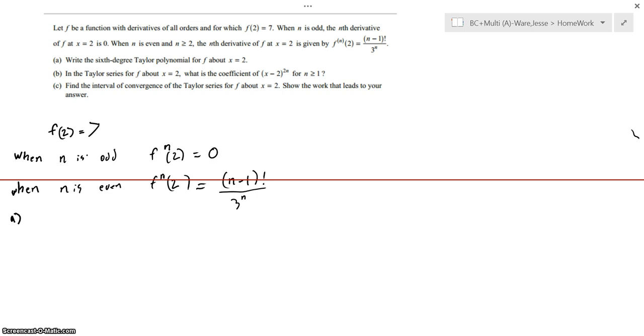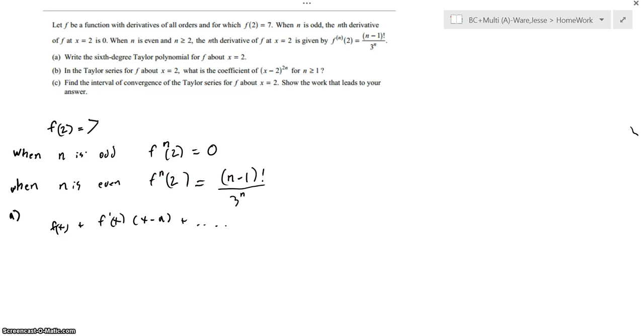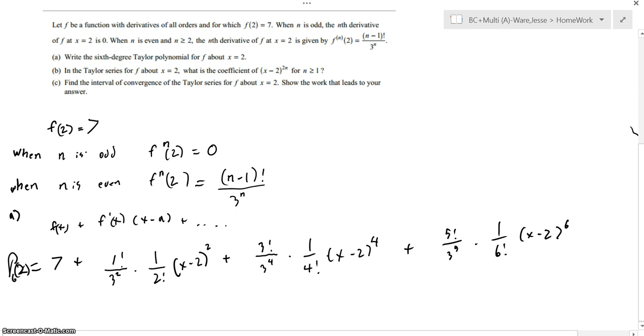Part A asks us to write the 6th degree Taylor polynomial for f about x equals 2, which is convenient because they don't give us any other information about f besides it being at 2. Given the general form of the Taylor polynomial, we can essentially just plug in and play with this entire Taylor polynomial. What you get when you plug it all in is 7 because that's what f of 2 is.